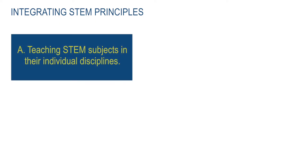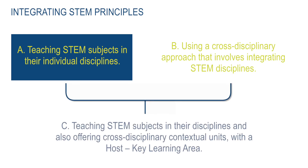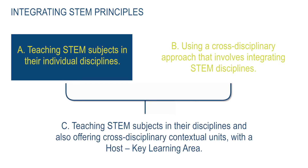When integrating STEM principles, you have three choices. A, teaching STEM subjects in their individual disciplines. B, using a cross-disciplinary approach that involves integrating STEM disciplines. Or C, teaching STEM subjects in their disciplines and also offering cross-disciplinary contextual units with a host key learning area. We adopt option C.